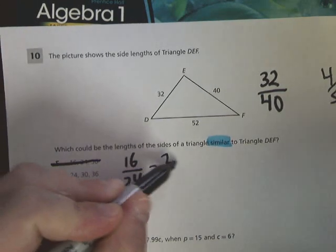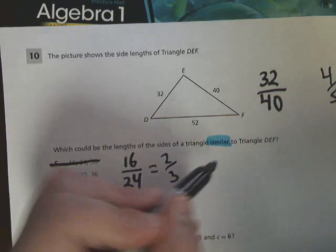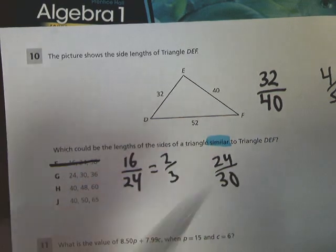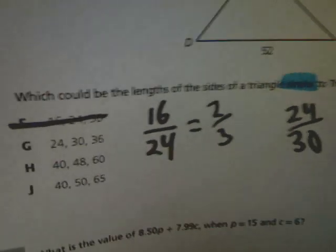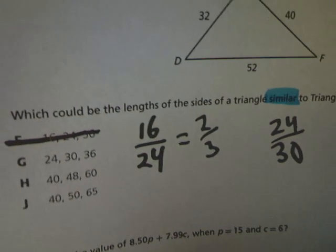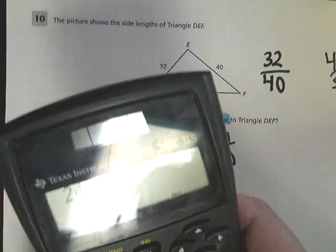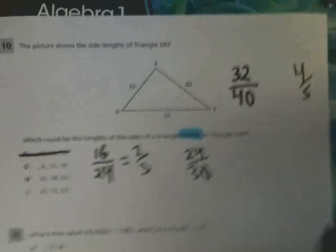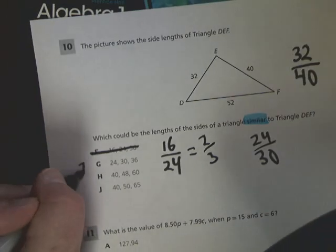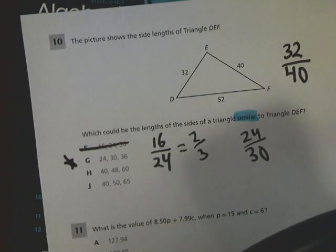Now I'm going to try 24 over 30, picking the first two in each one. 24 over 30, those are the two smallest sides. I get 4/5. That's looking pretty good, right? So I'm going to put a star next to G and see if any of the other ones work that way too.